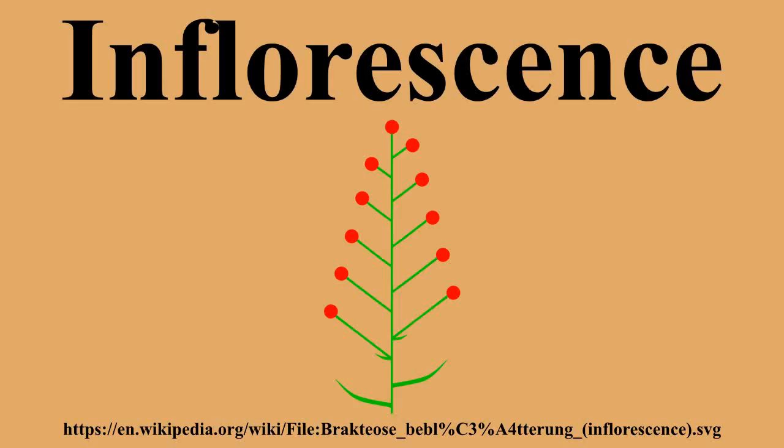Simple inflorescences are the basis for compound inflorescences, also called synflorescences. The single flowers are replaced by a simple inflorescence, which can be either racemose or cymose. Compound inflorescences are composed of branched stems and can involve complicated arrangements that are difficult to trace back to the main branch. A kind of compound inflorescence is the double inflorescence, in which the basic structure is repeated in the place of single florets. For example, a double raceme is a raceme in which the single flowers are replaced by other simple racemes.